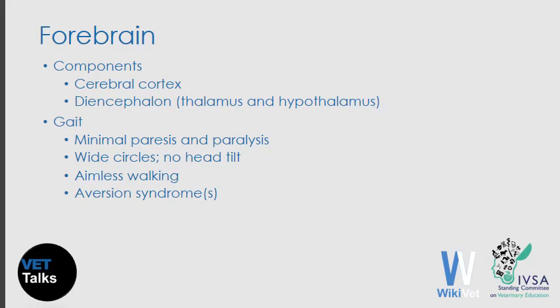Let's now turn our attention to abnormal gaits and their value in lesion localization. The first gaits we're going to describe are those associated with disorders affecting the forebrain. Recall that the forebrain is composed of the cerebral cortex and the diencephalon, which includes the thalamus and the hypothalamus.